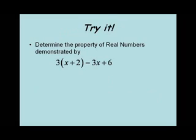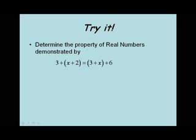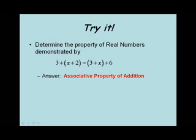So let's try some. Let's determine the property of real numbers demonstrated by the following equation: 3 times (x plus 2) equals 3x plus 6. Which property is demonstrated by this equation? The answer is the distributive property. Let's try another: which property is illustrated by the equation 3 plus (x plus 2) equals (3 plus x) plus 6? The answer is the associative property of addition.